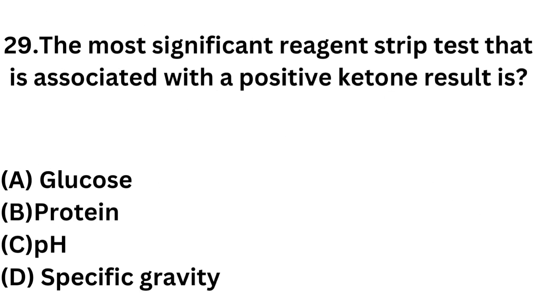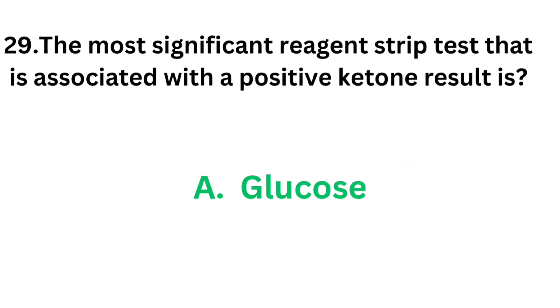Question number 29: The most significant reagent strip test that is associated with a positive ketone result is — Option A: Glucose. Option B: Protein. Option C: pH. Option D: Specific gravity. The correct answer is glucose. A diabetic patient will be positive for ketone bodies, such as acetone.